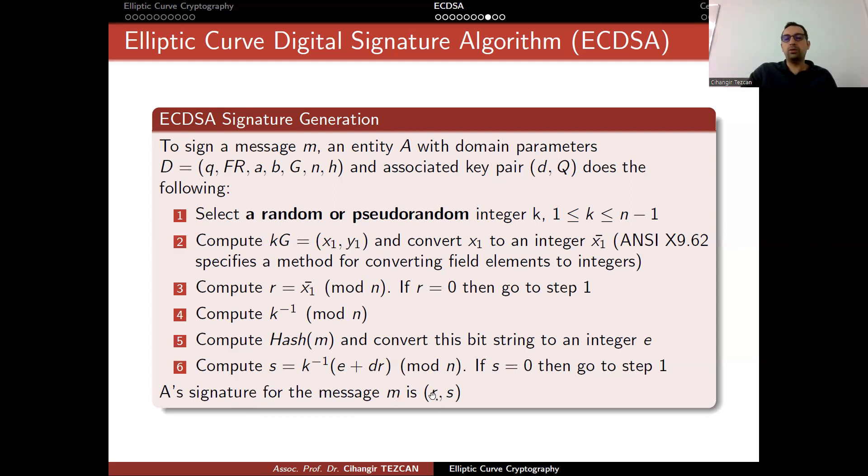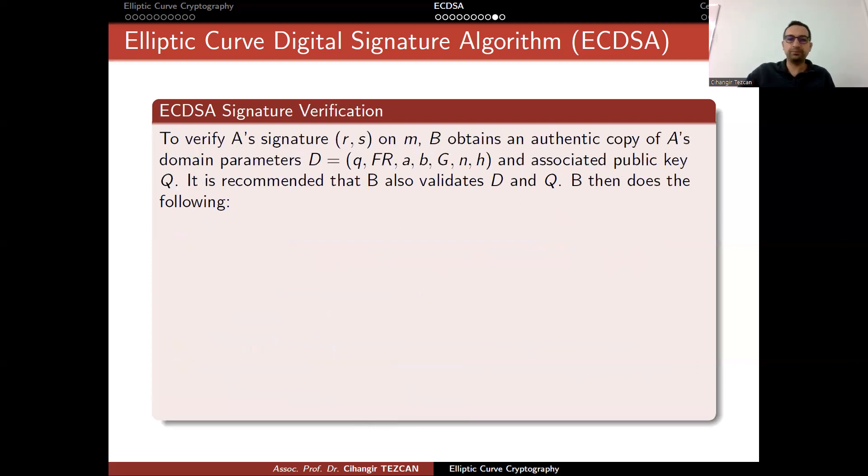Once you sign the message m, you produce r and s. In a cryptocurrency transaction, this is your signature. Then, everybody can verify it and realize that you are the one who signed this message. In terms of cryptocurrencies, everybody is convinced that you had those cryptocurrency initially and you are transferring it to somebody else.